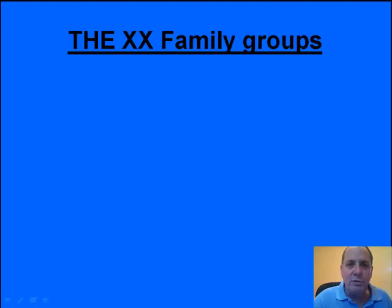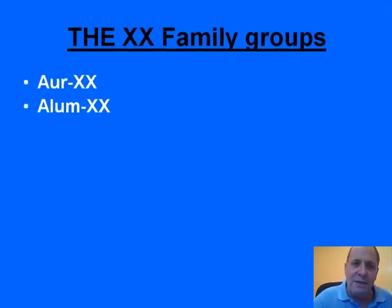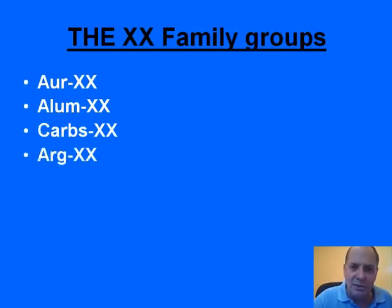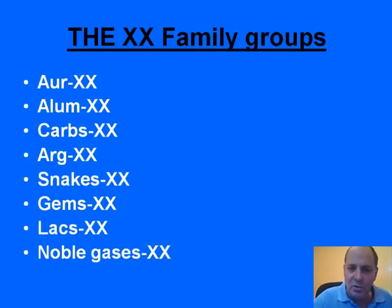We have also created family groups, usually designated by XX — though that might differ in different software. Some might use an asterisk. The idea is that family groups will also pass through the repertorization, so that carbs, argentums, snakes, gemstones, the lacs, or the noble gases will pass through as families.